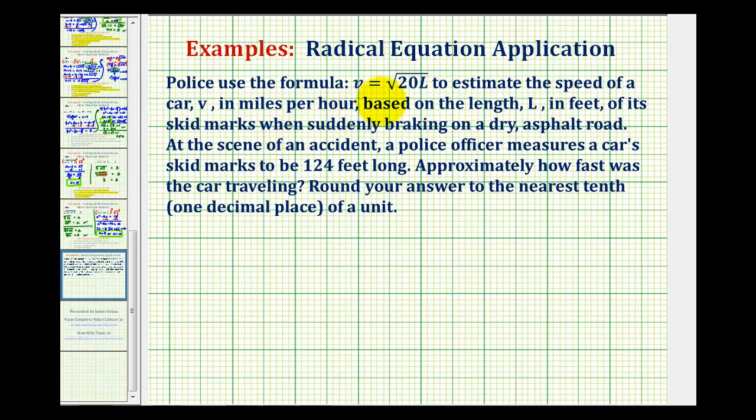Police use the formula V equals the square root of 20L to estimate the speed of a car, V, in miles per hour,